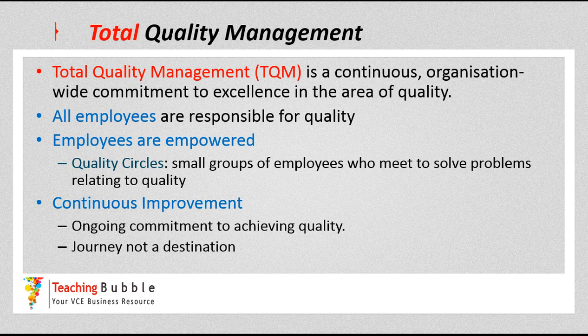Thirdly and finally, we have total quality management — TQM — which is a continuous, organisation-wide commitment to excellence in quality. It has three main elements: all employees are responsible for quality and should know their role in helping the organisation achieve it; employees are empowered to make decisions and help solve problems to continually improve quality; and they do this through quality circles, where employees meet in small groups to solve quality-related problems or discuss ways to enhance quality.